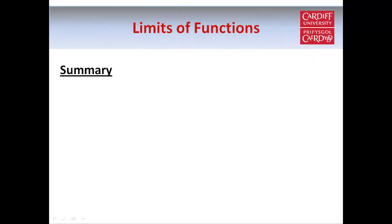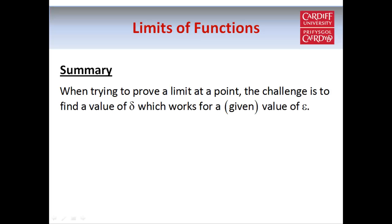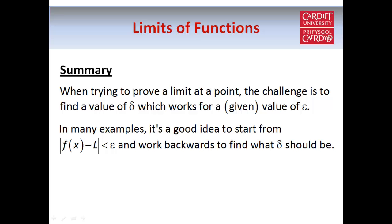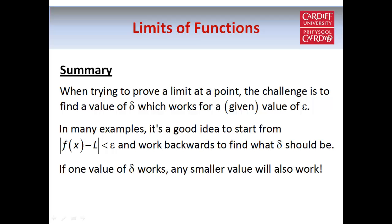To summarise: when you're trying to prove the limit of a function at a point, the challenge is to show that it's possible to choose delta in terms of epsilon in such a way that it satisfies the definition. You think of epsilon as something that you've been given, and you have to find a formula for choosing delta in terms of epsilon. A good strategy, especially for limits as x approaches 0, is to start with the inequality |f(x) - L| < ε and work backwards to find what that says about x — that tells you how to define delta. Remember, if one value of delta works, then any smaller value will also work, but finding one value that works is good enough.